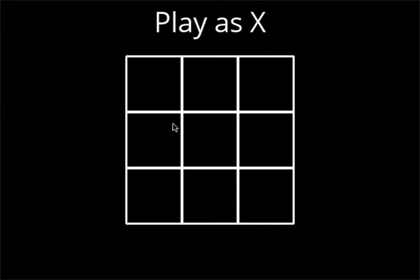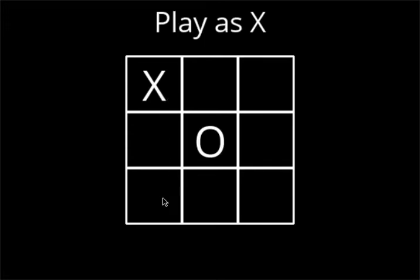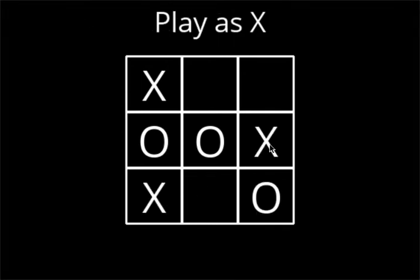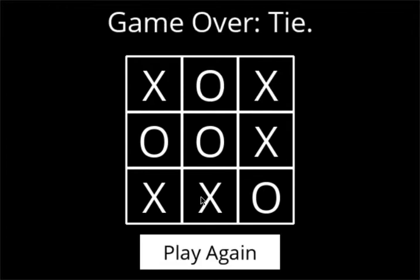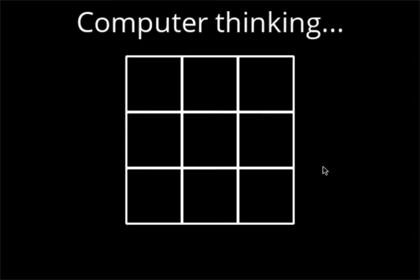I'm playing as X and the AI is playing as O. So here it is a tie game. Let's play one more time. Now I am playing as O, so the AI will play as X and the first step will be handled by AI.